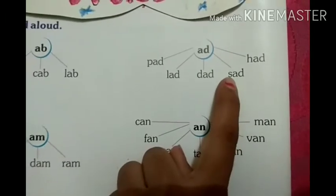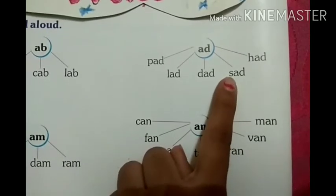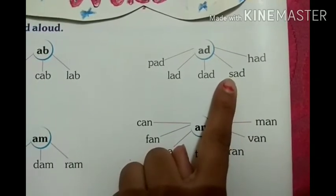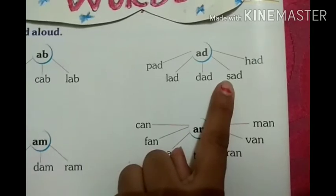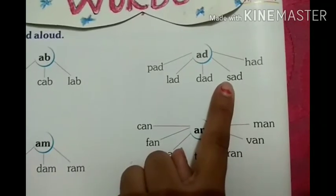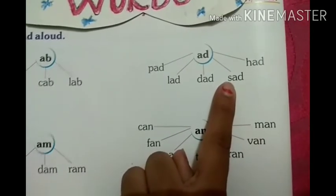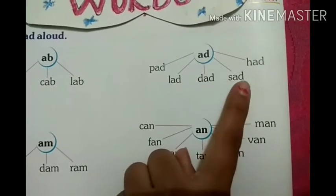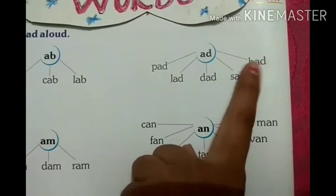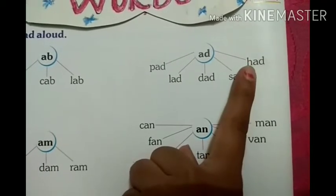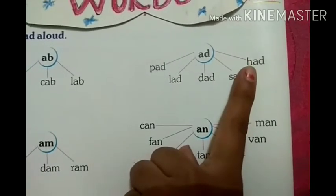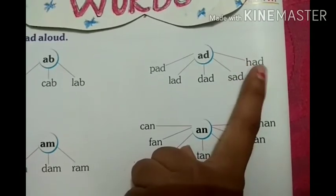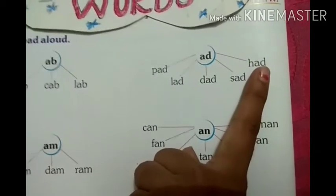What is the sound of S? The sound of S is S. What is the sound of S? S, A — SA. What is the sound of H? H, A — HA.